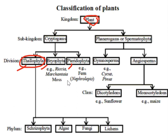Next is Bryophyta. The main features of this division — plants belonging to this group have a plant body. A few examples are Riccia, Marchantia, and Moss. Plants belonging to this group have false root-like structures called rhizoids and leaf-like structures. They are also autotrophs.